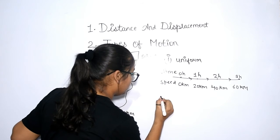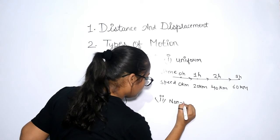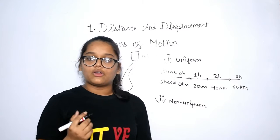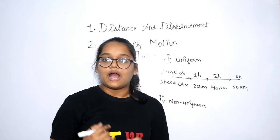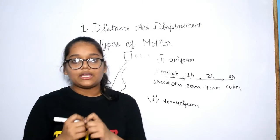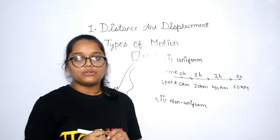And the second type of motion is non-uniform motion. So friends, what is non-uniform motion? A body is said to be non-uniform motion when it travels unequal distance and equal interval of time. It is just opposite to uniform motion.